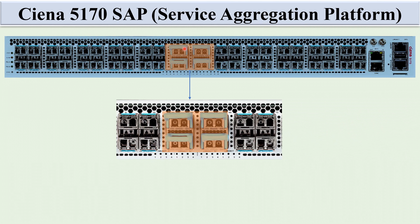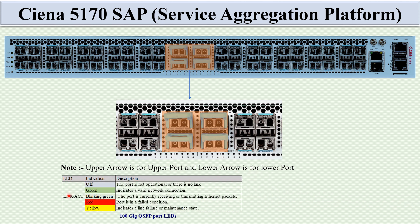The four 100G QSFP ports each have LEDs where the upper arrow indicates the upper port and the lower arrow indicates the lower port. The Link/Act LED has five indications: off means the port is not operational or no link; green indicates a valid network connection; blinking green means the port is currently receiving or transmitting Ethernet packets; red means the port is in a failed condition; yellow indicates line failure or maintenance state.